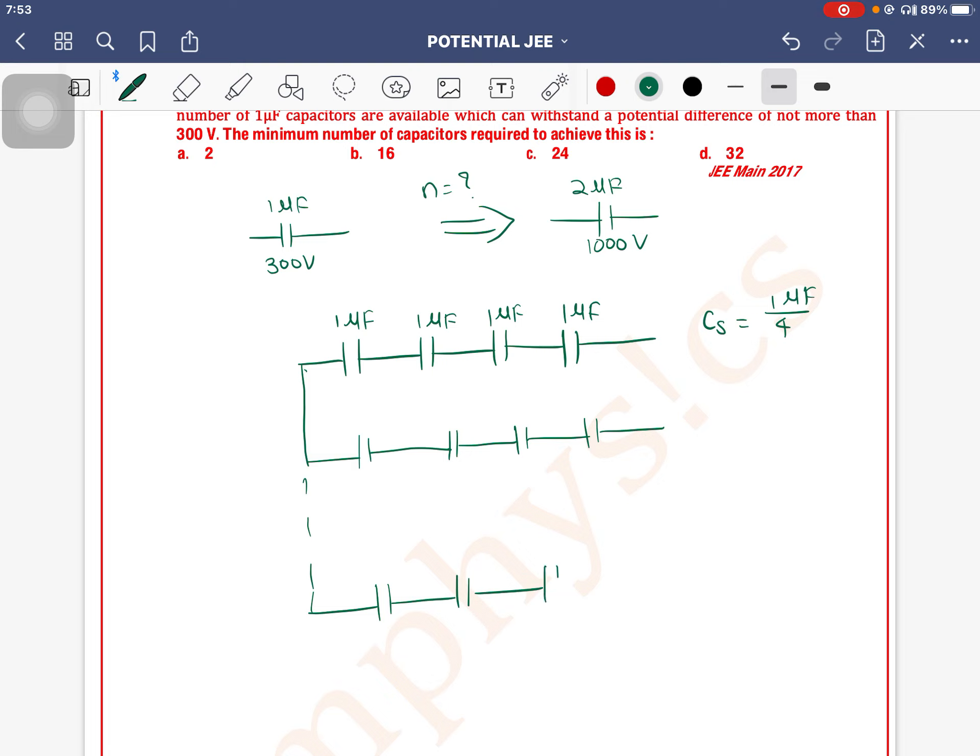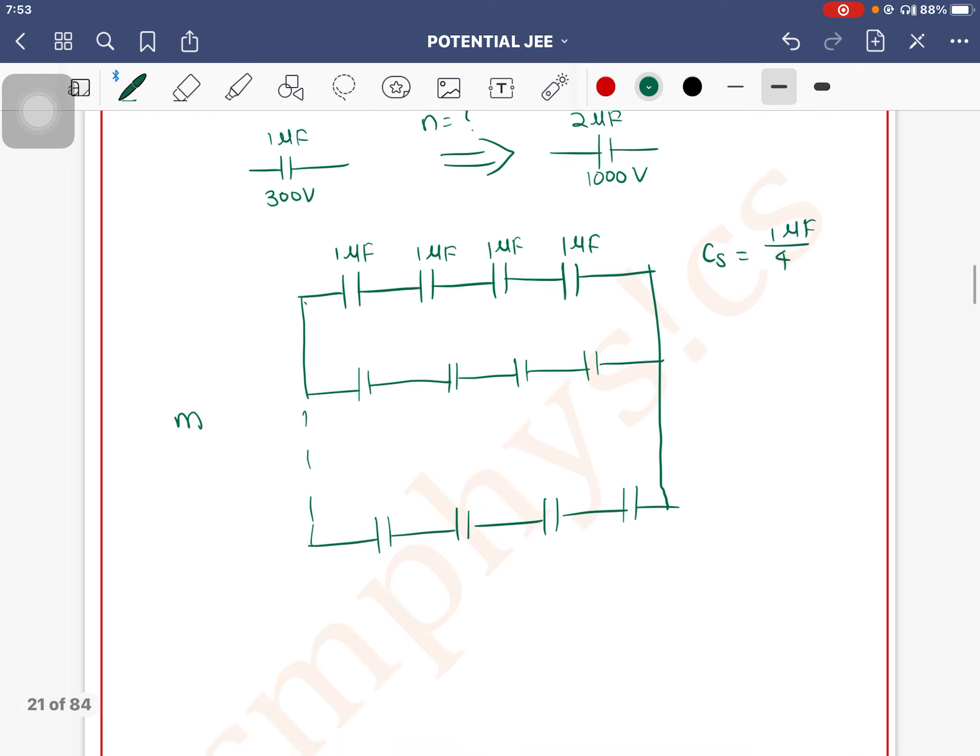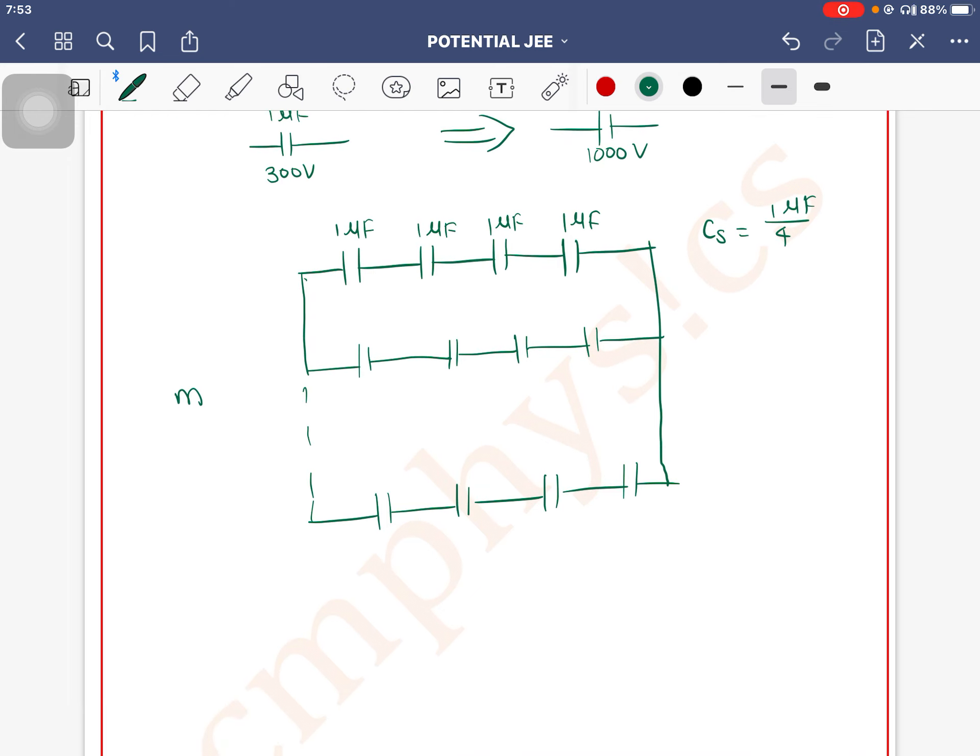How many branches need to be connected in parallel? Let's say m number of branches are there, where each branch has a capacitance of 1/4 microfarad.